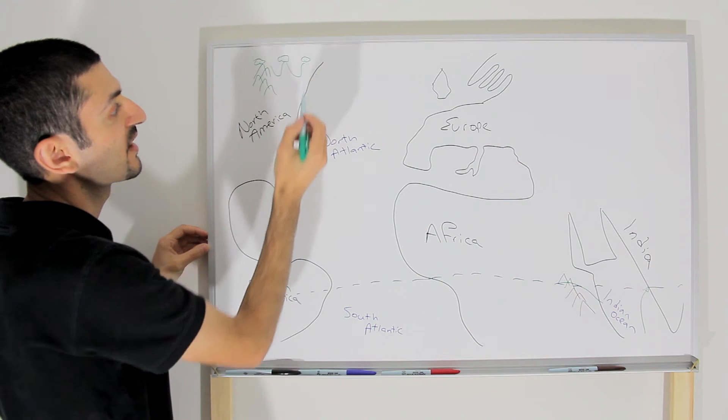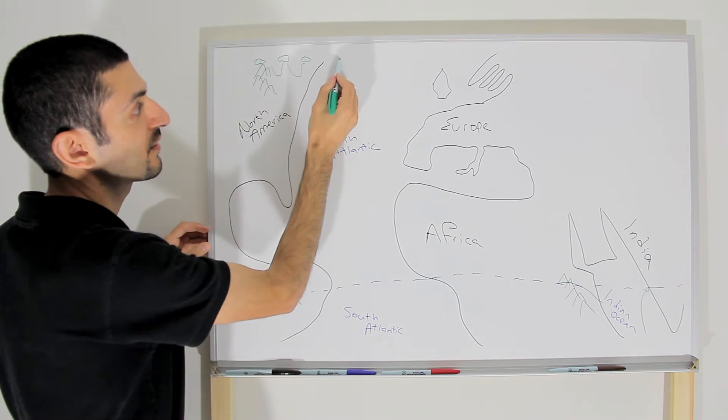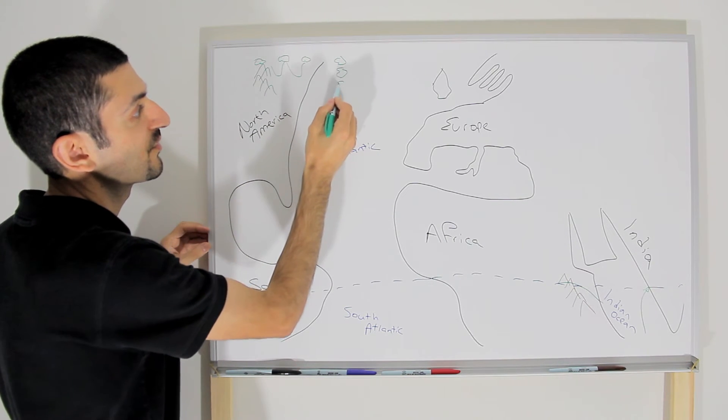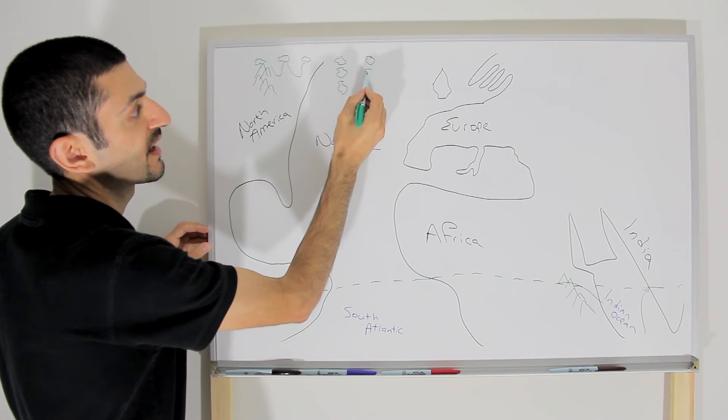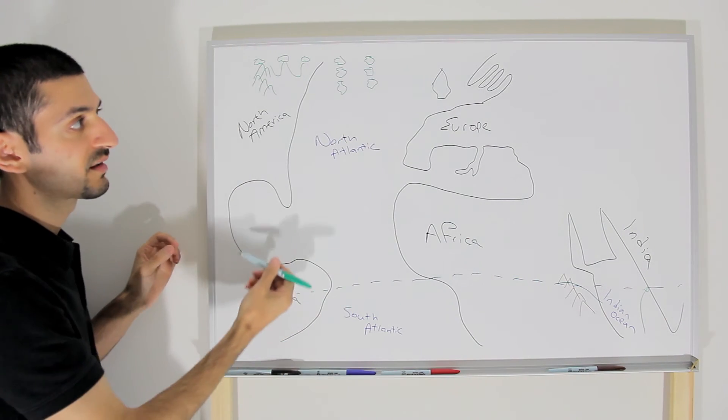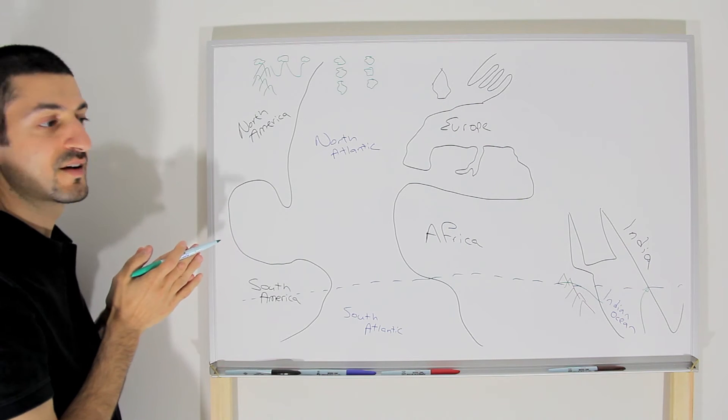So, it creates bands of clouds that, when you look from outer space from satellite images, you're gonna have rows of clouds propagating away from the mountains.